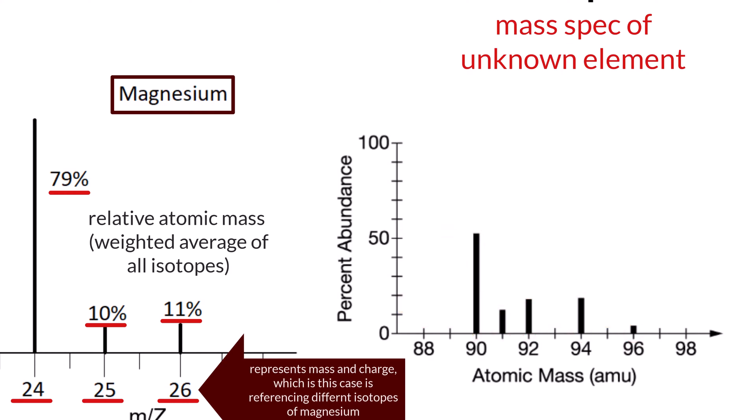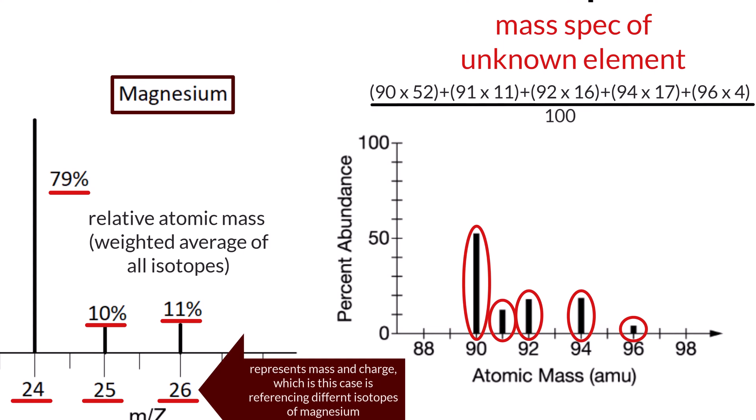We can plug this information into our atomic mass calculation, which would be 90 times 52 plus 91 times 11 plus 92 times 16 plus 94 times 17 plus 96 times 4, all divided by 100. This gives me a relative atomic mass of 91.35 when considering all of the isotopes.